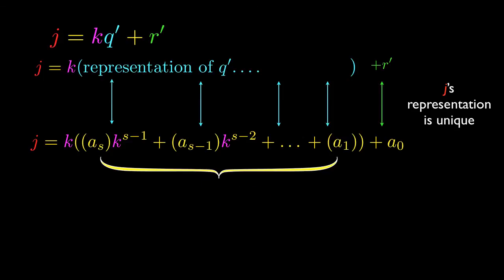What this means is that because our representation was, in fact, of the form j is equal to kq plus r, that means the representation of q prime must be equal to the representation of q, and therefore q must be equal to q prime. And the stuff on the outside of the parentheses must also be the same.